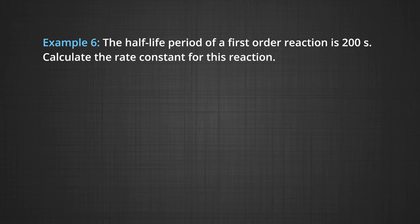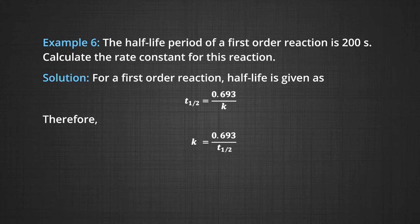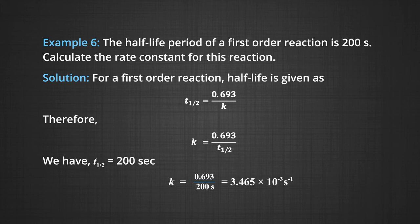Another example: The half life period of a first order reaction is 200 seconds. Calculate the rate constant. For a first order reaction, T½ = 0.693/K, therefore K = 0.693/T½ = 0.693/200 = 3.465 × 10⁻³ per second.